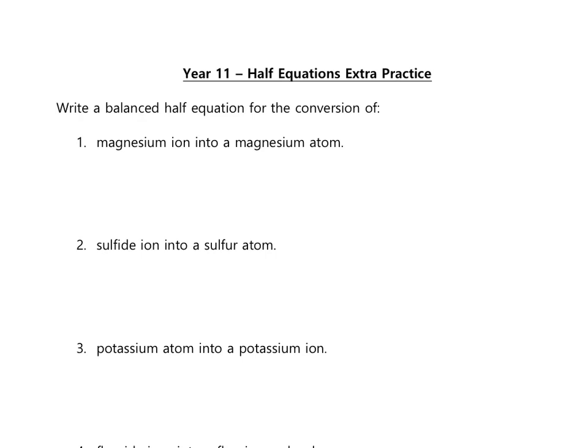The first example is a magnesium ion converting into a magnesium atom. We write our reactants and products: starting with a magnesium ion. Magnesium has the symbol Mg. It's an ion, so it's a charged particle. Looking at the periodic table, magnesium is in group 2, which means it forms an ion with a charge of plus 2, written as 2+.